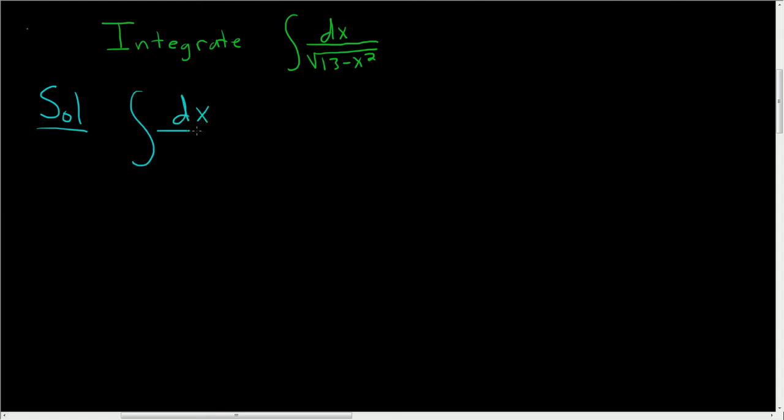dx divided by the square root of a squared minus x squared. This is equal to the arc sine of x over a plus a constant.